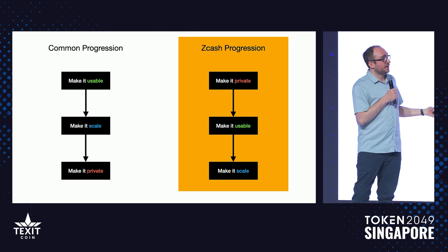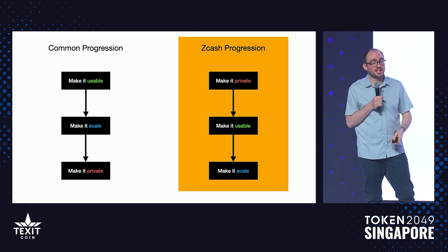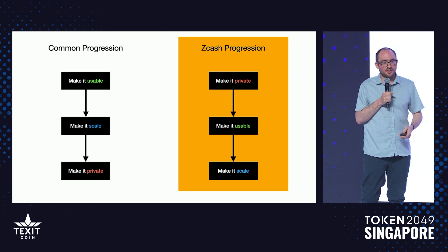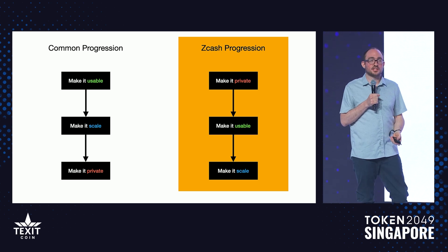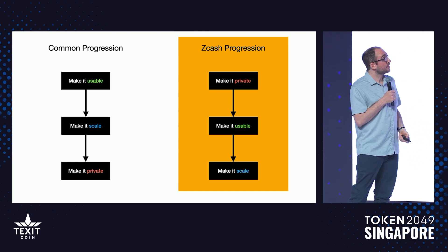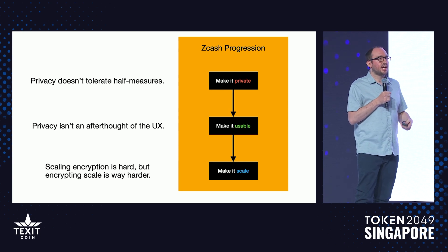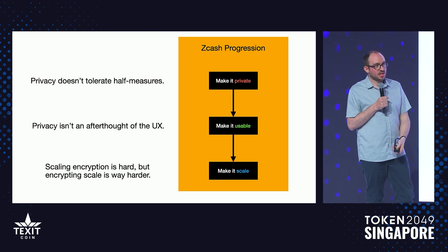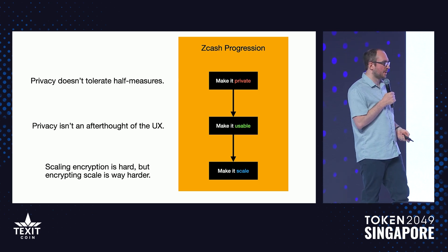In Zcash, we've done it in a completely different order. We started with really robust privacy, then we spent many years making it extremely usable, and finally with Tachyon we're going to make it scale by removing the last remaining bottlenecks. The reason is you don't want privacy to be an afterthought in your protocol design — you need to integrate it early on so you don't do a bad job of privacy, usability, or scale later.